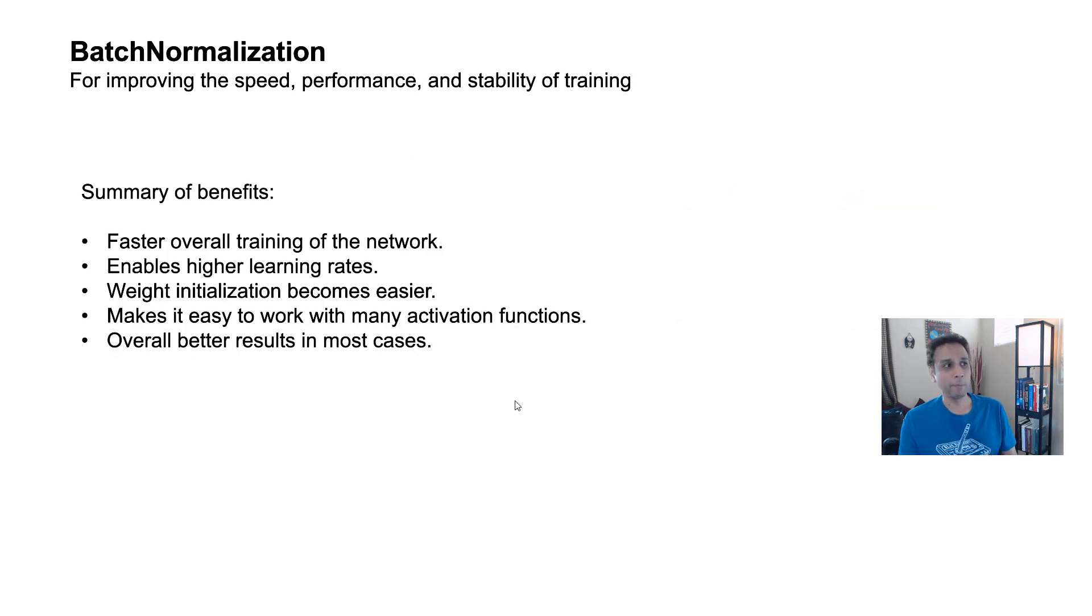Just to summarize the benefits: fast overall training of the network. When you add batch normalization, it's going to do extra computation. So for individual epoch may take a longer time, but then it takes fewer epochs to get to the answer. You don't have to do 1,000. You may get convergence even with 500 epochs.